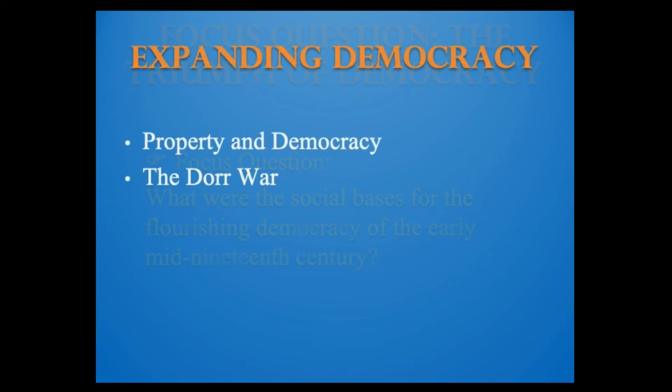One basis of political democracy in this period was the challenge to property qualifications for voting. It began in the American Revolution but culminated in the early 19th century. After the Revolution, no new state required property ownership to vote. And in older states, constitutional conventions in the 1820s and 1830s abolished property qualifications, partly because the growing number of wage earners who did not own much property demanded the vote.